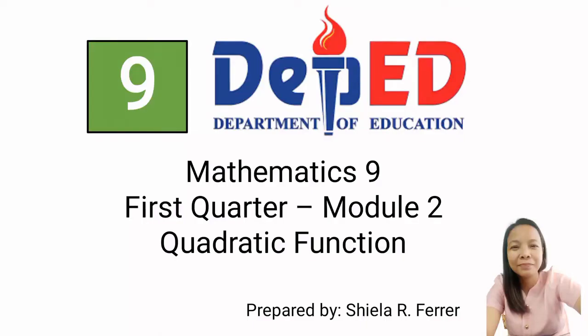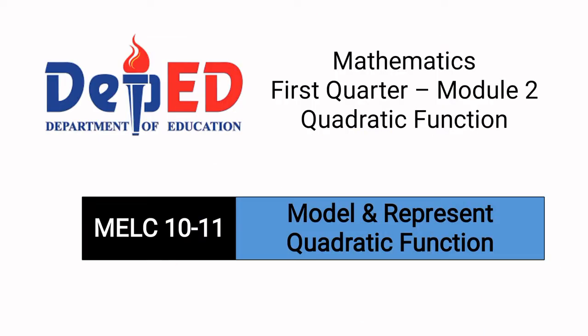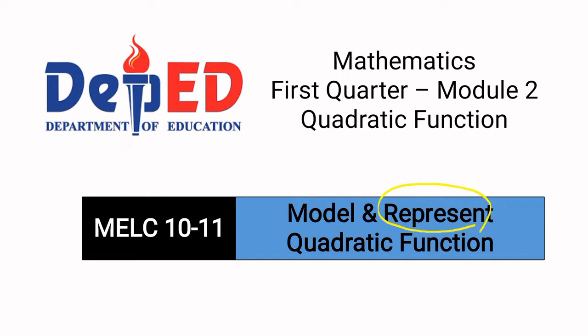Good day everyone! We are now in Module 2 for the first quarter, which is all about quadratic functions. For the first topic in Module 2, we will be discussing two competencies: number 10 and number 11. Competency number 10 is modeling quadratic functions, and competency number 11 is representing quadratic functions. So let us start.